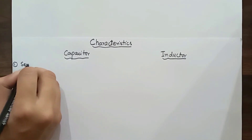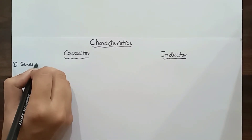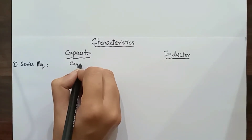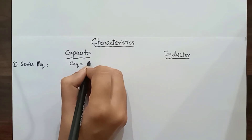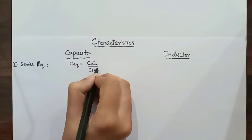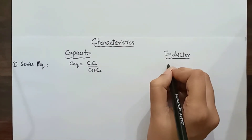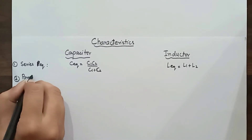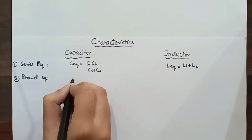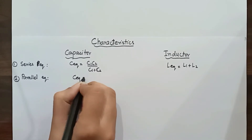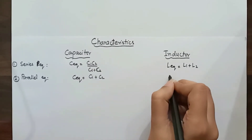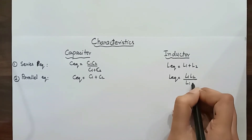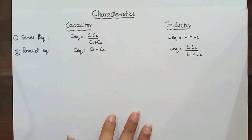The first parameter is series equivalent capacitance or inductance. If two capacitors are connected in series, they behave just like resistances connected in parallel. Two inductors in series behave like two resistors in series. For parallel equivalent, capacitors in parallel simply add up, while inductors in parallel behave the same way as resistances in parallel.